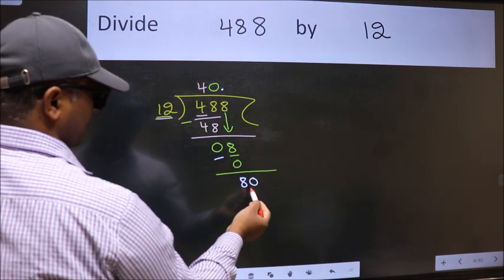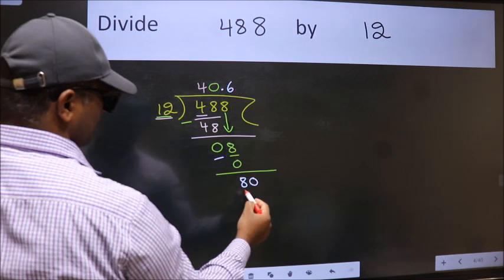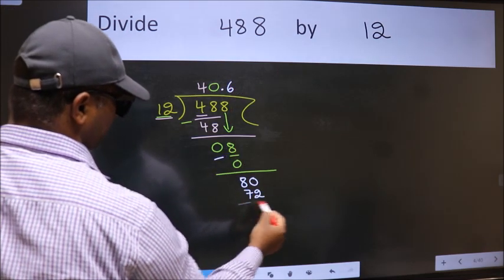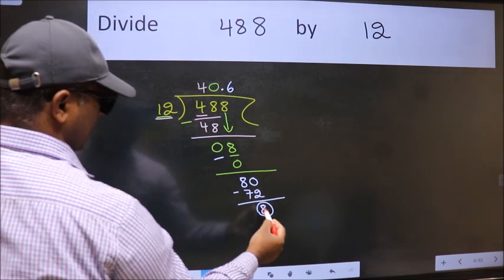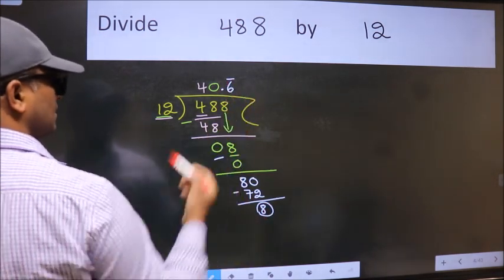So, 80. A number close to 80 in 12 table is 12 times 6, 72. Now we subtract. We got 8 again. That means we get bar on this number.